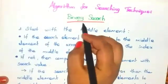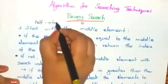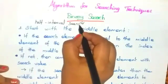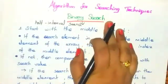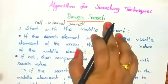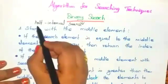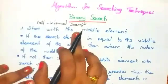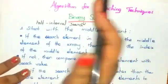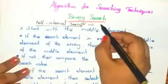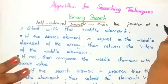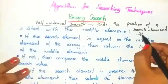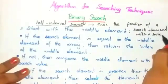Binary search is also called the half-interval search algorithm. Linear search is called sequential search, but binary search is called half-interval search because we start our search with the middle element — the elements are divided into two halves. It is used to find the position of a search element within a sorted array.